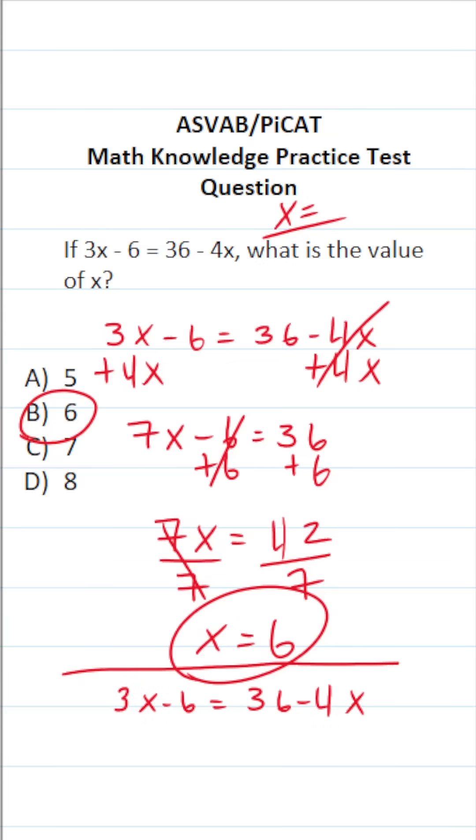If this makes a true statement, we know we did our work correctly. So let's plug in 6 for x here and 6 for x here. This becomes 3 times 6 minus 6 equals 36 minus 4 times 6. 3 times 6 is 18, so this is 18 minus 6 equals 36 minus 4 times 6 is 24.